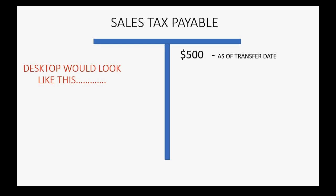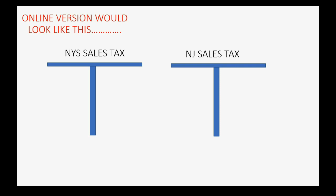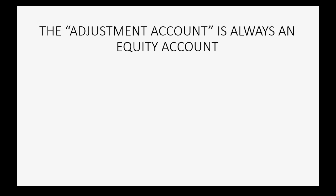In the Desktop version, the T-account has a $500 balance, but each individual agency's record shows how much is owed to that particular agency. But in QuickBooks Online, both the subsidiary records and the T-accounts in the chart of accounts show the individual amounts owed to each individual sales tax department.